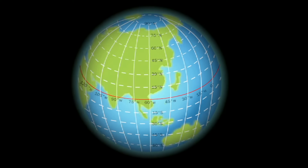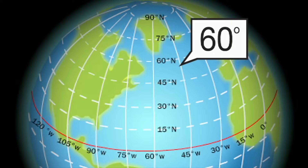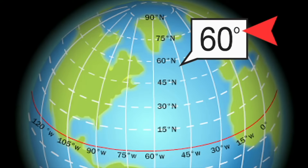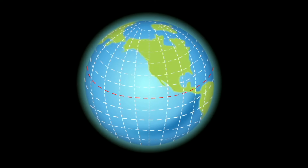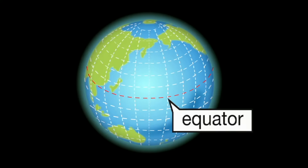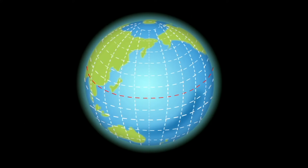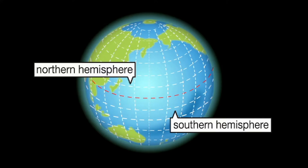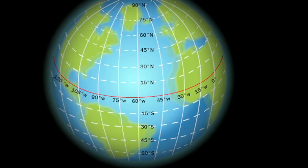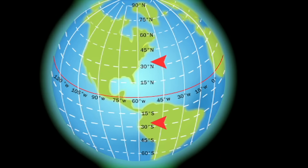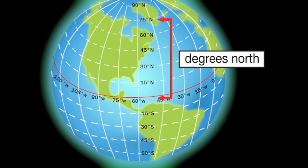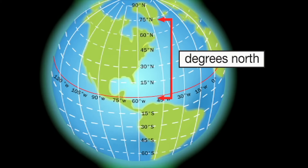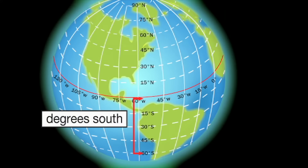Latitude and longitude lines are measured in units called degrees. A degree is represented by a number plus the degree symbol. The line that runs around the very middle of the Earth has a special name called the equator. The equator is at zero degrees. Everything above the equator is called the northern hemisphere, and everything below the equator is called the southern hemisphere. The lines of latitude run from zero degrees at the equator to 90 degrees at the poles. Any distance above the equator is measured in degrees north, and south of the equator, places are measured in degrees south.